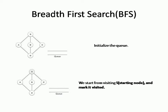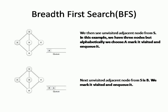As the first rule of the algorithm says, we start visiting from the starting node. Here we consider the starting node as vertex s and mark it as visited. Next, we check for unvisited adjacent nodes from s. There are three nodes: a, b, and c. Alphabetically we choose a, mark it as visited, and add that visited node to the queue.